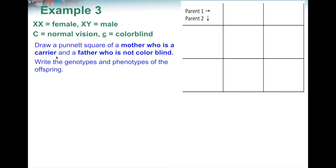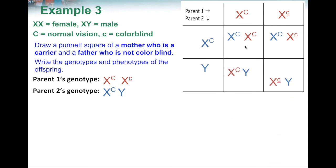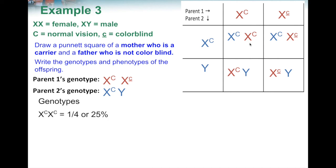In the last problem, the mom is a carrier. She is XX — one X has capital C for normal vision and the other carries the recessive lowercase c. So her genotype is X capital-C, X lowercase-c. Dad is not colorblind, so he is X capital-C, Y. We place mom's and dad's genotypes on the Punnett square and fill in the inside, getting four different genotypes: X capital-C / X capital-C, X capital-C / X lowercase-c, X capital-C / Y, and X lowercase-c / Y.